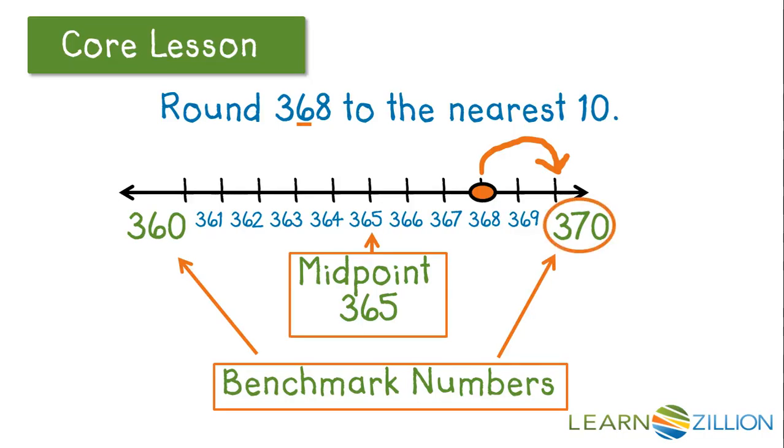Notice since we round up, the six turns into a seven because we need to go to the higher group of ten. And the eight turns into a zero.